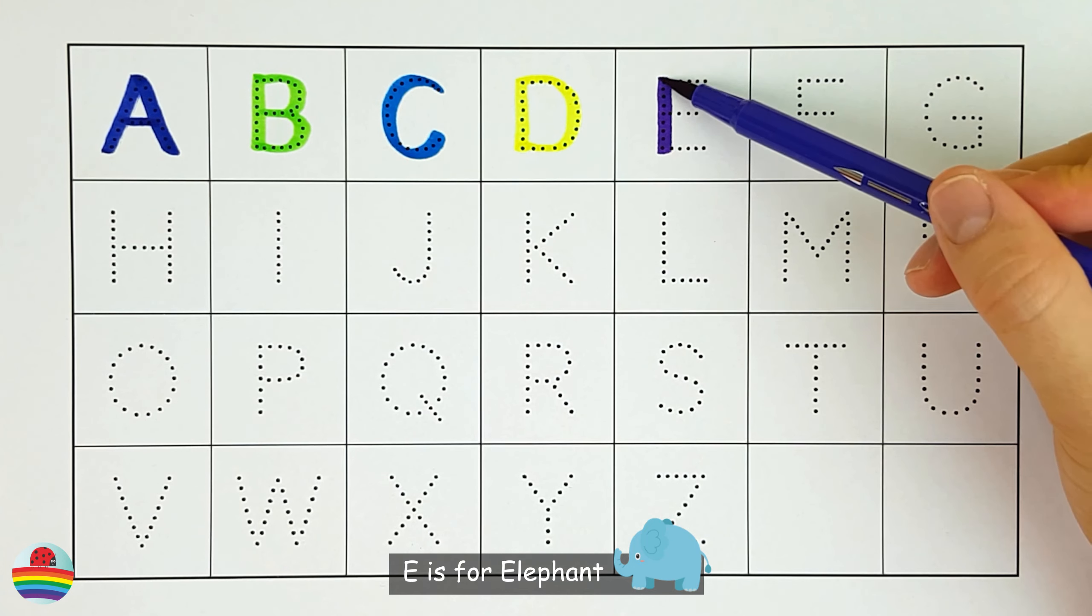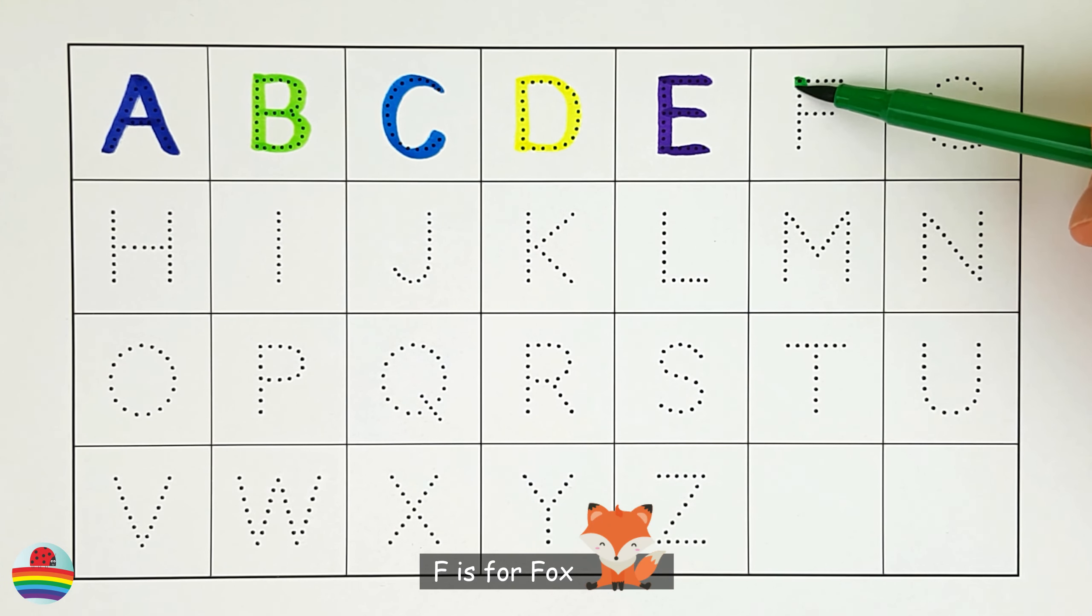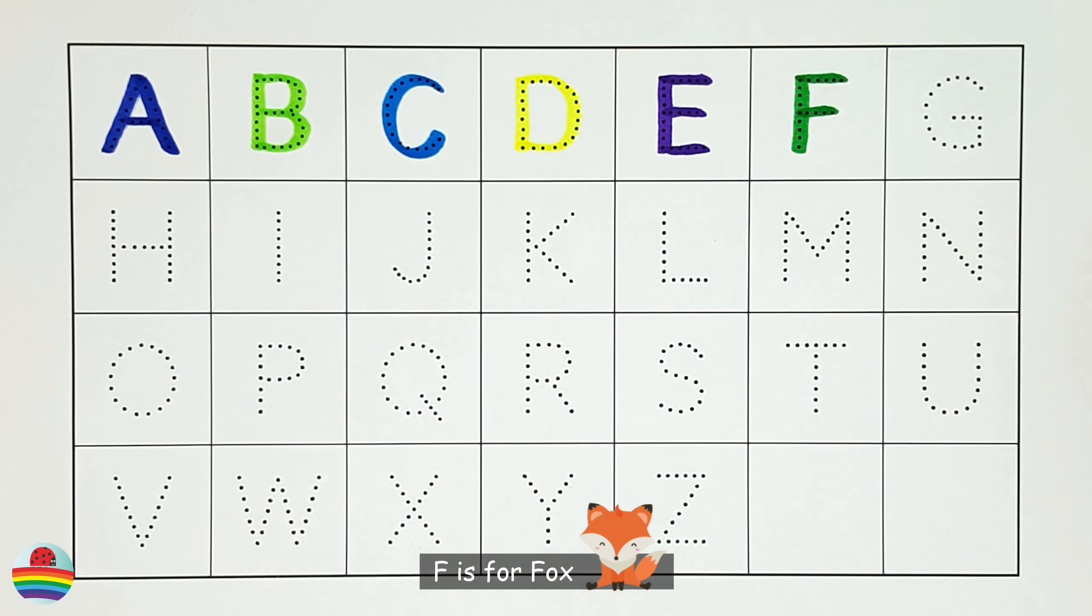E. E is for elephant. E. F. F is for fox. F.